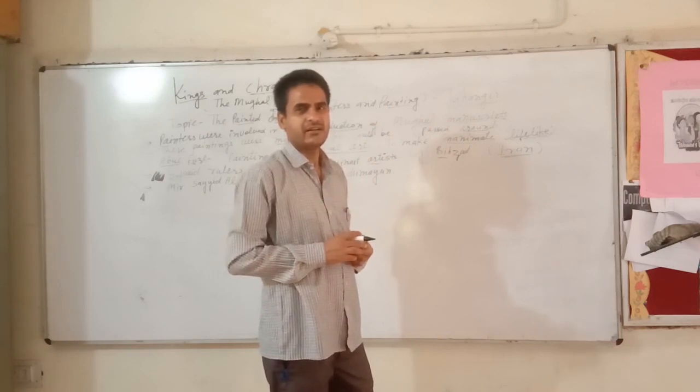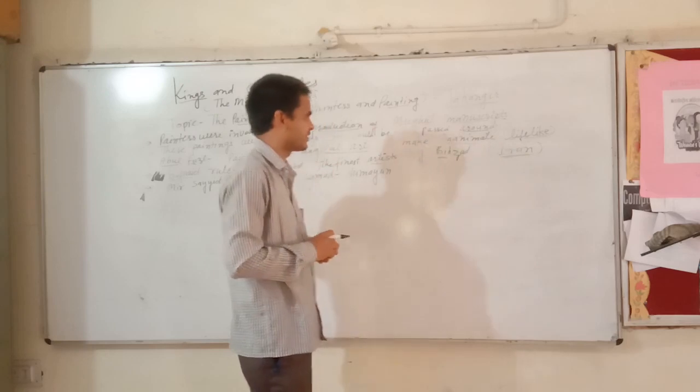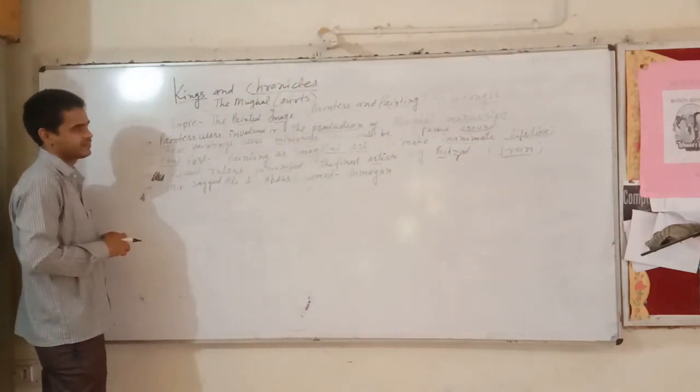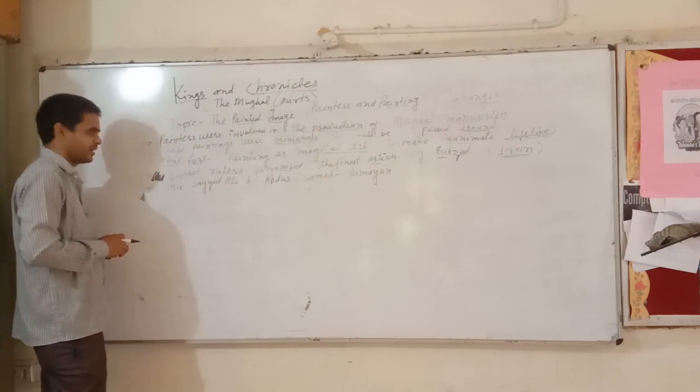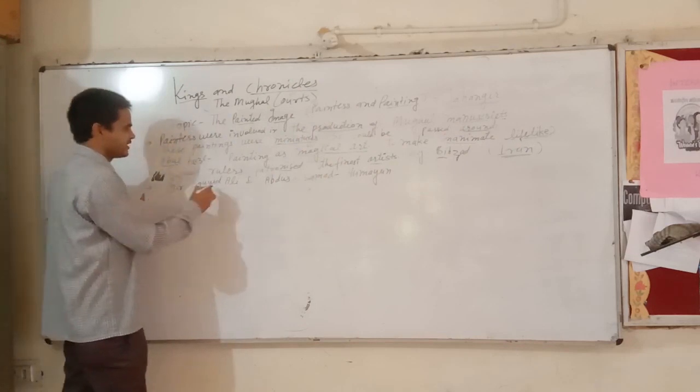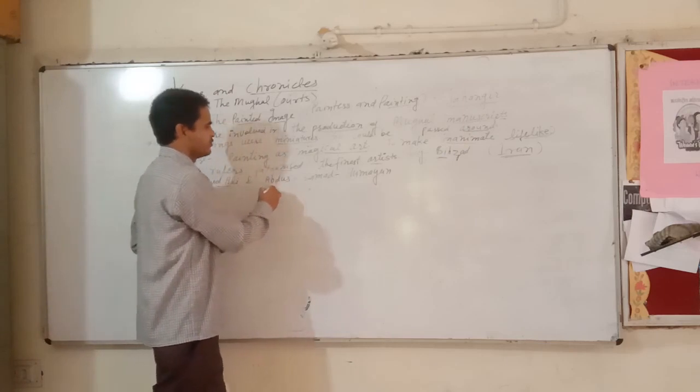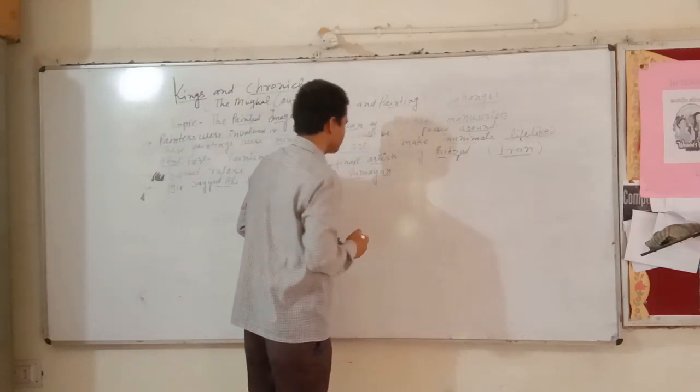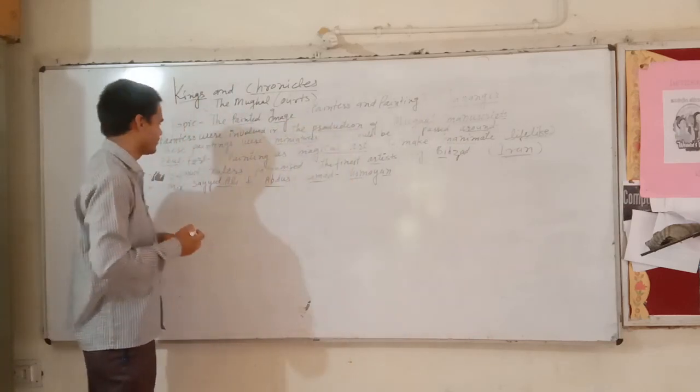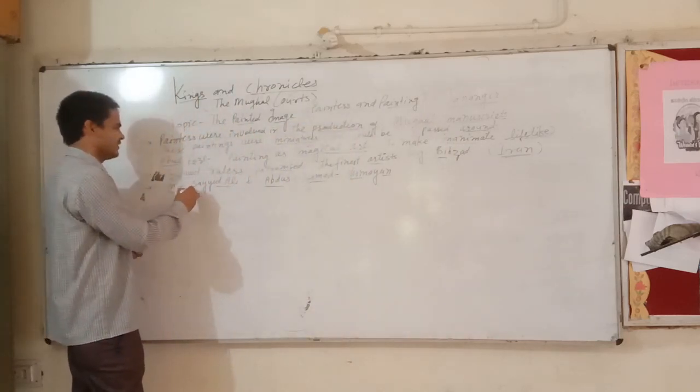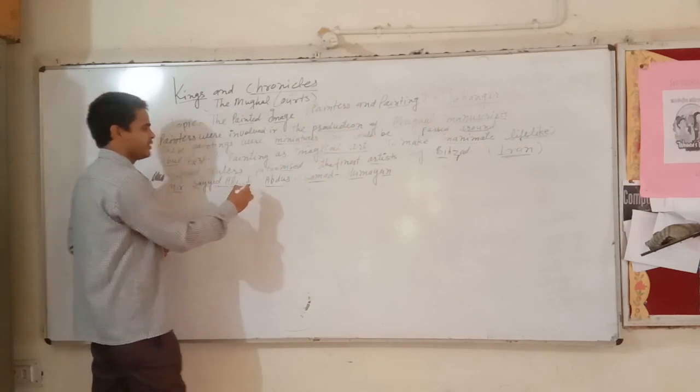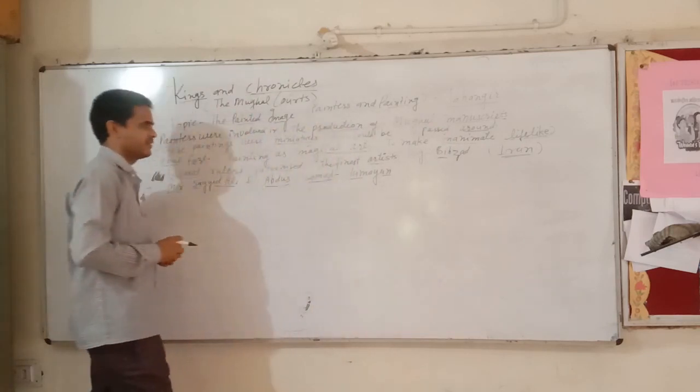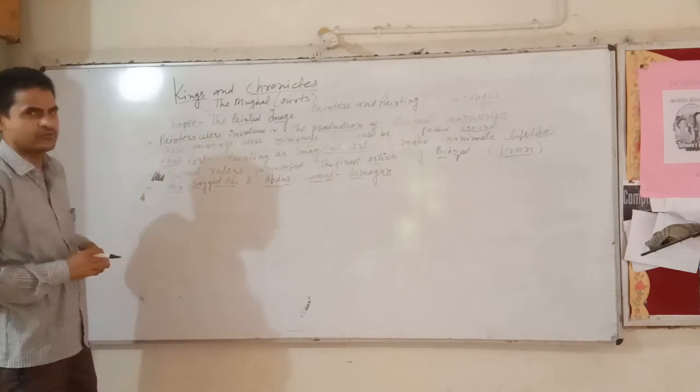In the world, famous painters Mir Sayyad Ali and Abdus Samad were the artists in the court of Humayun.